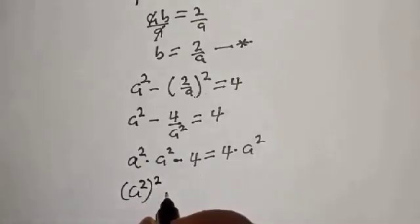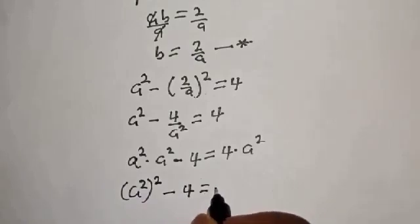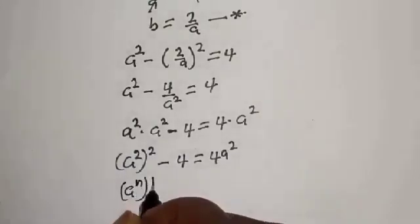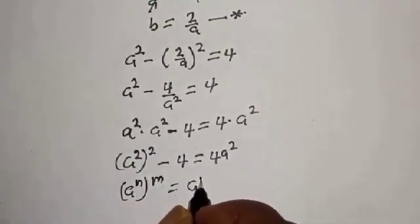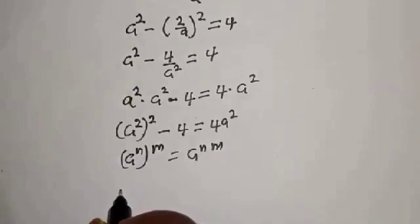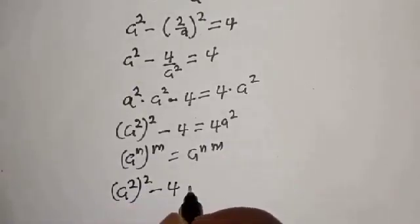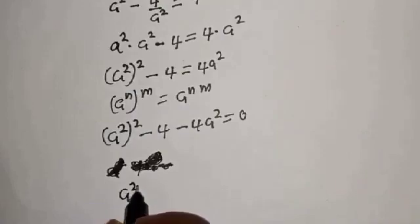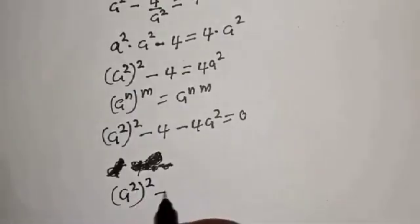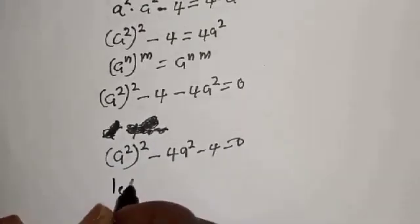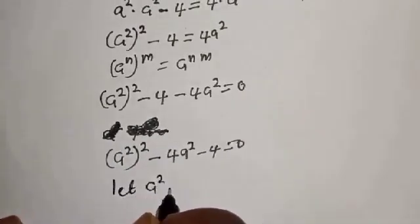Using the rule that (l^n)^m equals l^(nm), we get a squared squared, which is a to the fourth. Rearranging: a to the fourth minus 4a squared minus 4 equals 0. Now let a squared equal y.